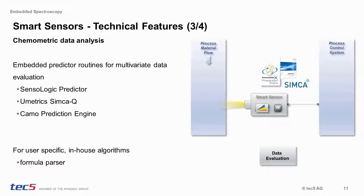A unique feature of our smart sensors is their capability to immediately convert measured spectra into process-relevant and manageable data. The integrated onboard data evaluation makes use of proven and well-established chemometric prediction routines. Many standard multivariate data analysis software packages, such as Sensologic Predictor, Eumetric Simca, and Chemo and Scrambler, are supported. In some instances, a simpler way of data evaluation is sufficient, and our built-in formula parser will help you realize such applications easily.